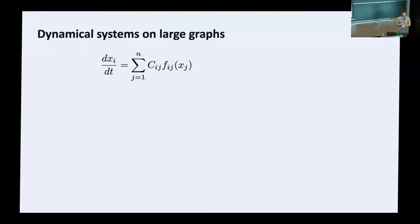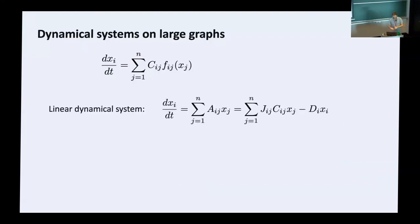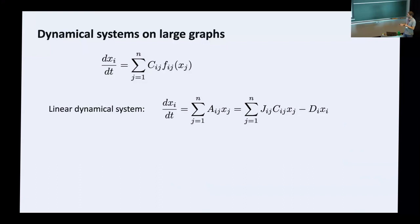This is in general a very difficult problem to solve — it's a set of nonlinear differential equations. Instead, what we typically do is look at something much simpler: the linear problem. The function becomes a linear function — the adjacency matrix multiplied by the vector x. The diagonal weights tell you how fast a variable x in isolation decays to zero, whereas the edge weights tell you the influence of neighboring nodes on the rate of change of x at node i.